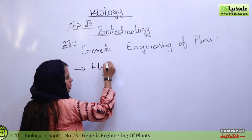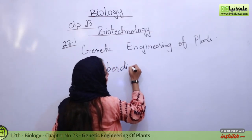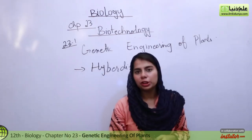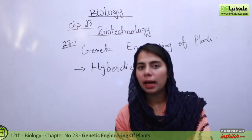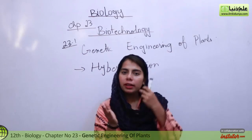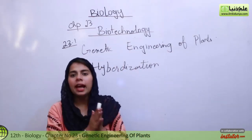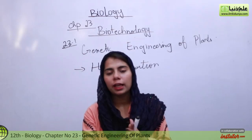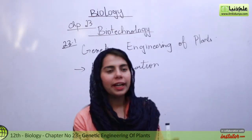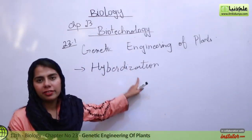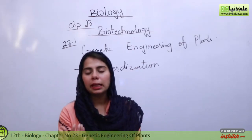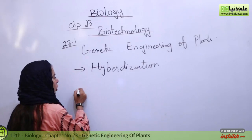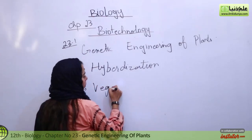Let's look at hybridization. What is hybridization? When you cross two different plants, or even two different species, that process is known as hybridization. When you cross two different plants or species, a totally new variety is produced. After hybridization, the new generation or variety is then subjected to vegetative propagation.